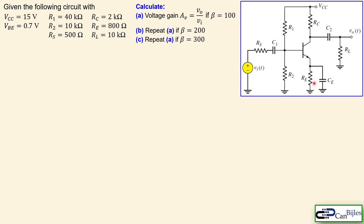This circuit has a load resistor in addition to example number four, and we see the four resistors again: R1, R2, RC, and RE. The values are shown, and the load is 10 kilohms. VCC is 15 volts, and VBE is 0.5 volt. The question is to calculate the voltage gain VO over VI for beta equal to 100, and we will repeat the process for 200 and 300.